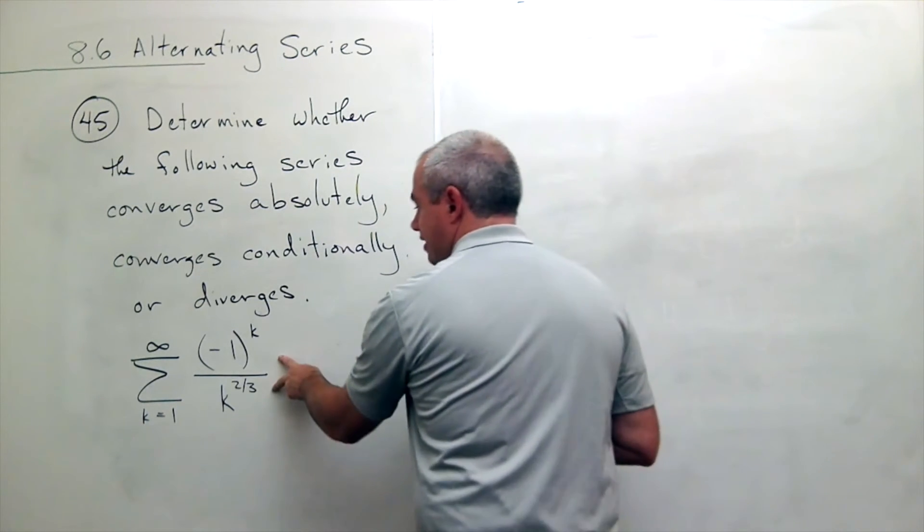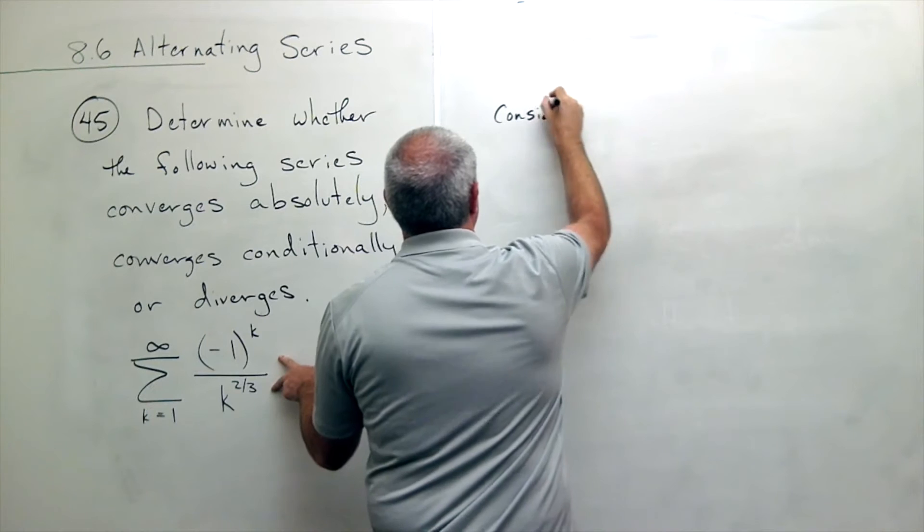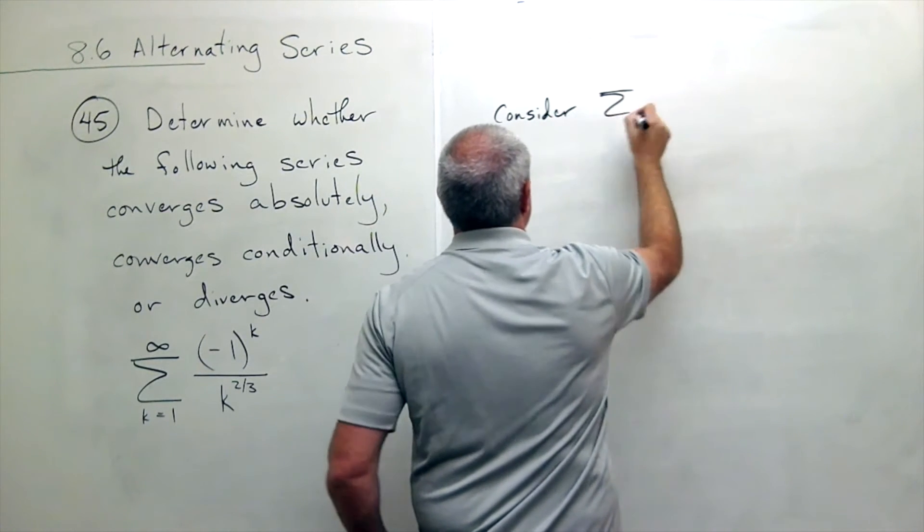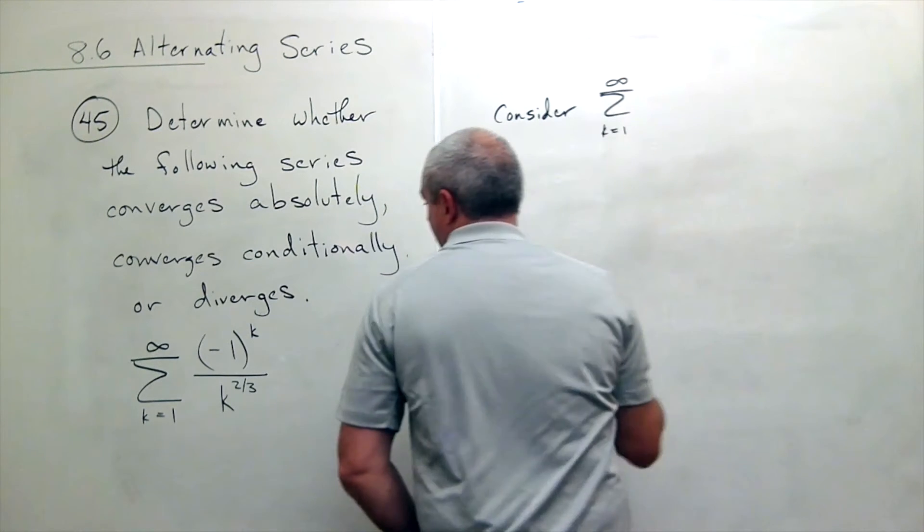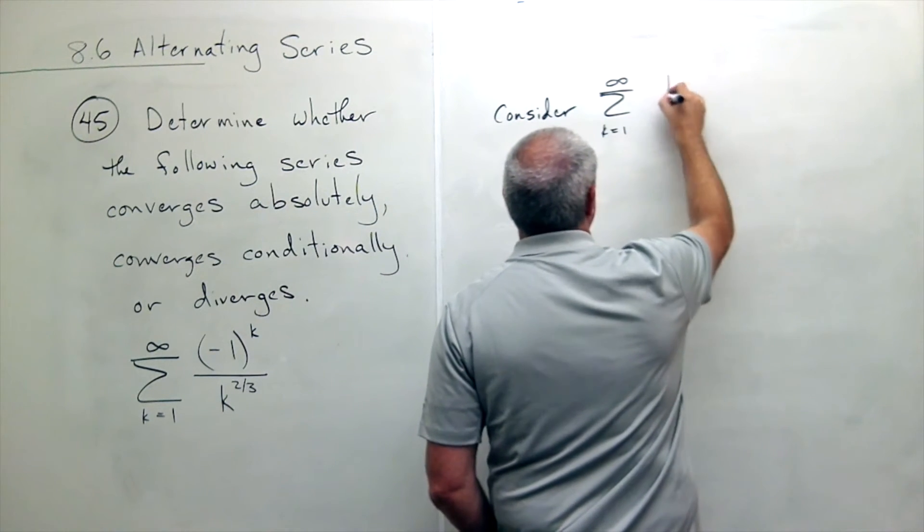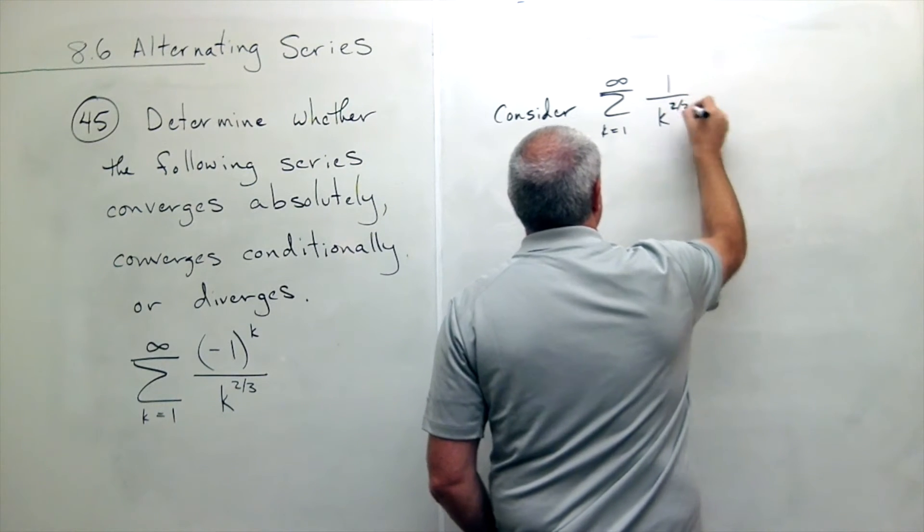So instead of looking at this guy, what we do is we consider this other sum, sum k going from 1 to infinity, of 1 over k to the 2/3.